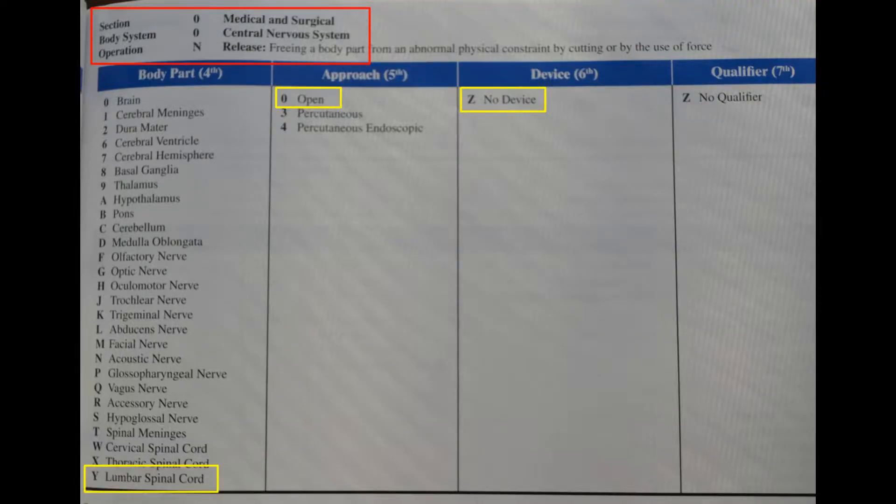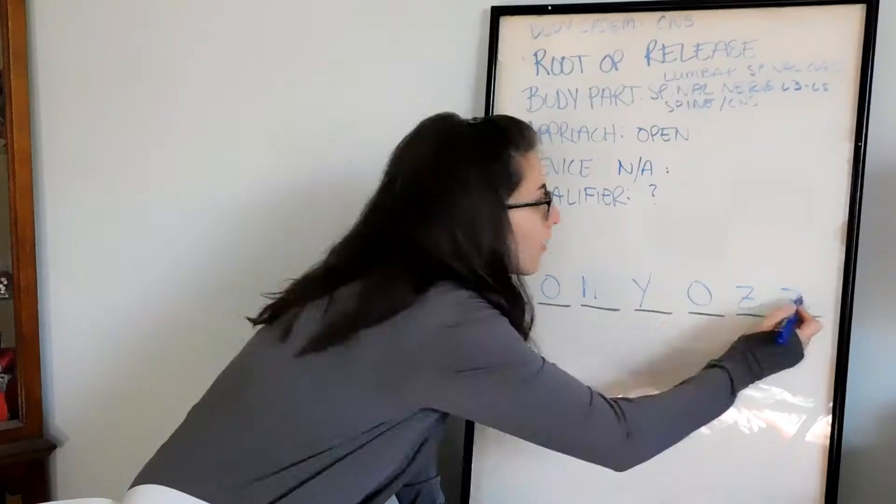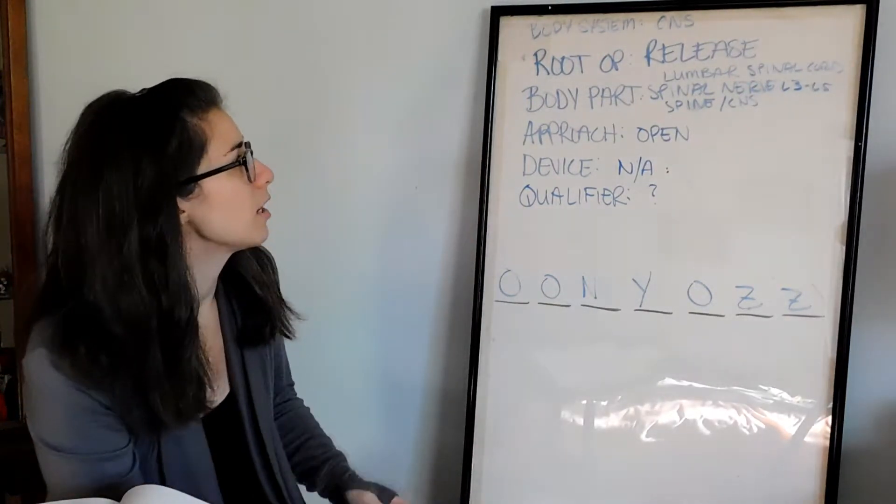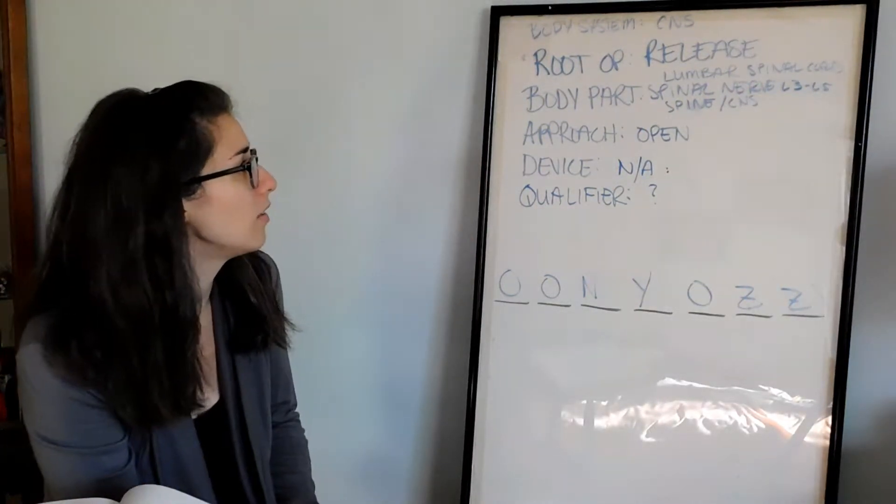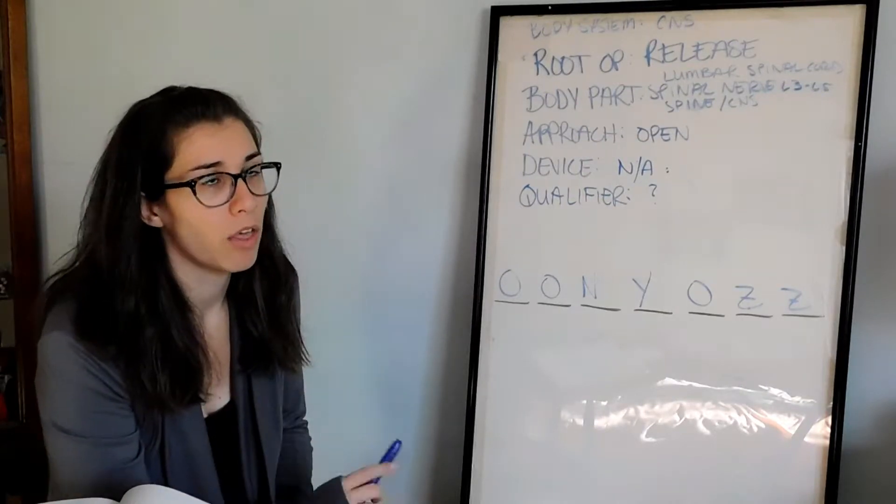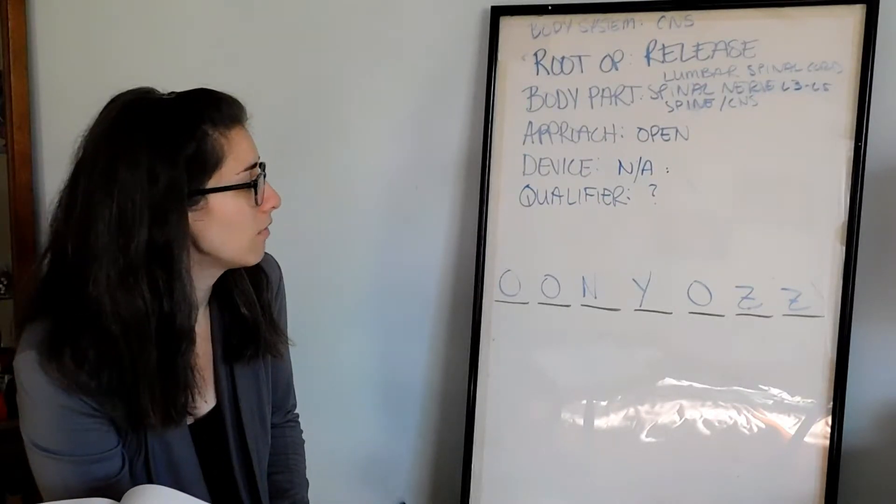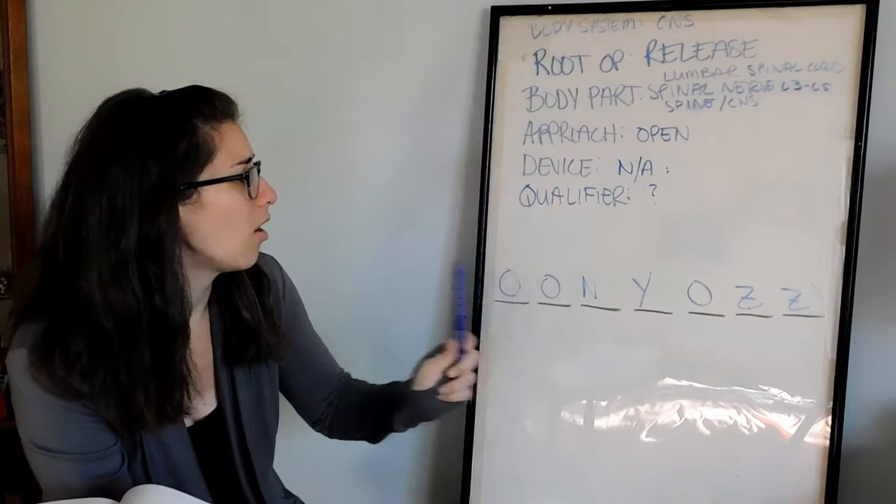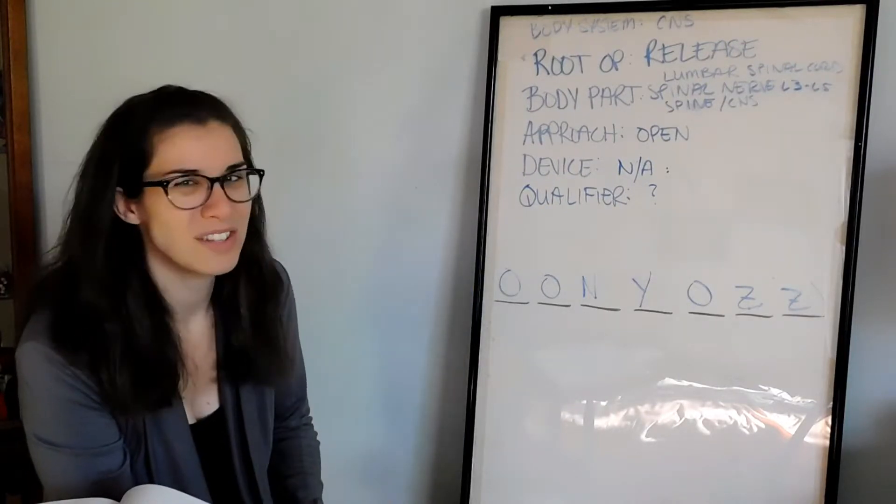Device. No device. So we get to put a Z. And there's also no qualifier, so we get to put a Z again. So that would be our code for a decompressive laminectomy of the lumbar spine L3 through L5: O-O-N-Y-O-Z-Z. That was an easy one.